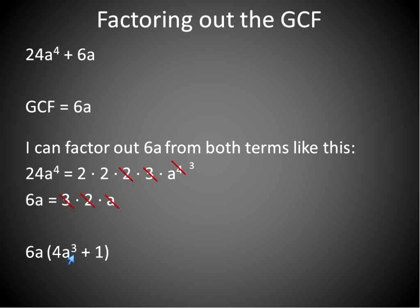So the factored form is 6a(4a³ + 1). If we use the distributive property to check, we multiply 6a times each term — and we can see that if 6a were multiplied times that 1, we get our second term back. Without that 1, we could never get back to the original expression.